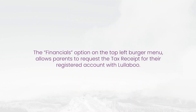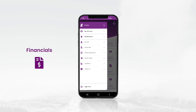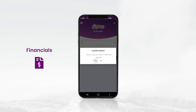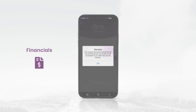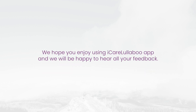Financials. The Financials option on the top left burger menu allows parents to request the tax receipt for their registered account with Lullaboo. Any parent who has an active account with a valid email address in the child care management software and is responsible for paying the child care fees can request the tax receipt for the previous 3 years. To request the tax receipt, click the top left burger menu, select Financials, then select the year for your invoice receipt request, and click Continue. You will get a confirmation message as soon as we receive your request. The tax receipt will be securely emailed to you with your registered email ID. Please note that it may take up to 45 minutes for us to prepare and email the tax receipt. We hope you enjoy using the iCare Lullaboo app and we are happy to hear all your feedback.